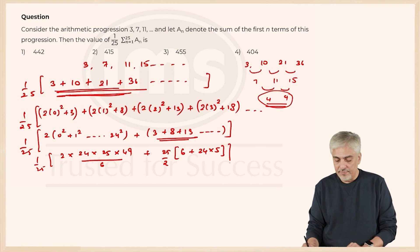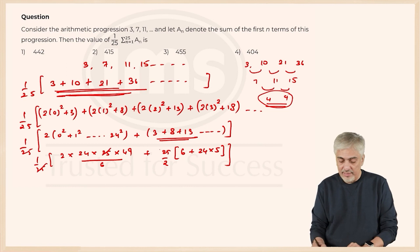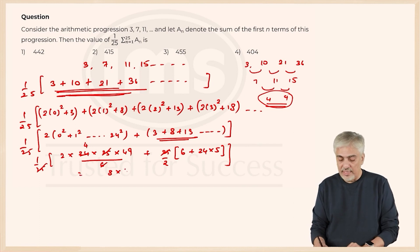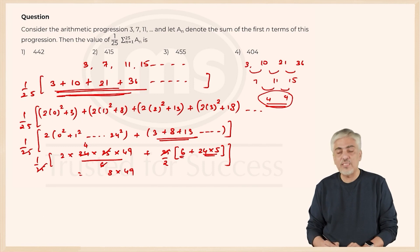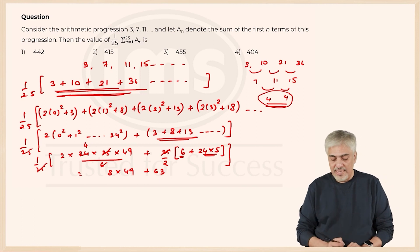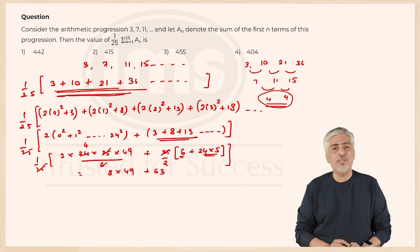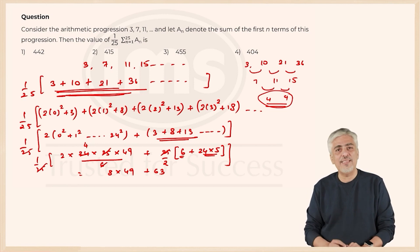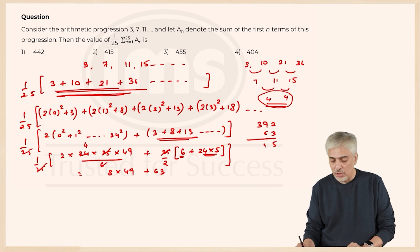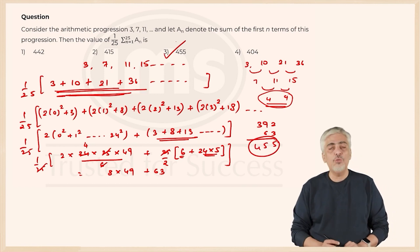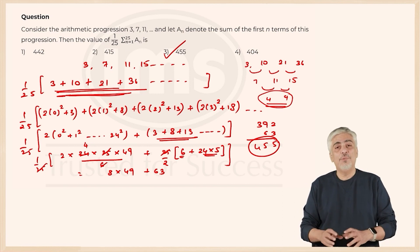The 25 cancels in both places. For the first part: 2 × 24 × 49/6 = 8 × 49 = 392. For the second part: (6 + 120)/2 = 126/2 = 63. So we get 392 + 63 = 455.